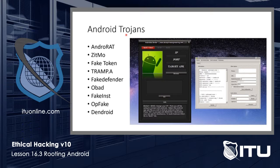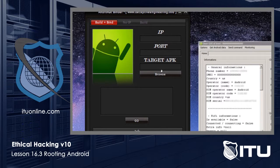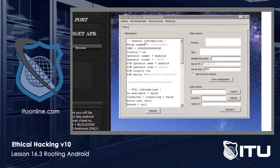There are a number of Android Trojans: AndroRat, Zitmo, FakeToken, Trampa, FakeDefender, OBAD, and others. Here's an example of Android RatBinder. You put in an IP address and a port, you create an APK, then you make a connection and start doing stuff to the phone that you just compromised.